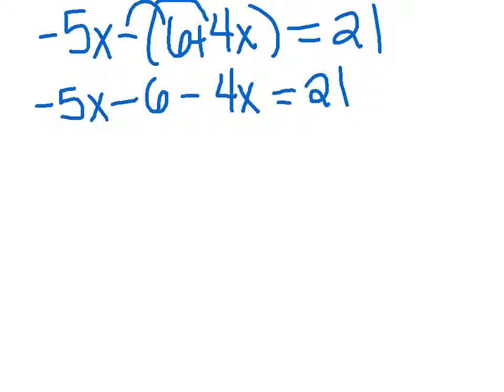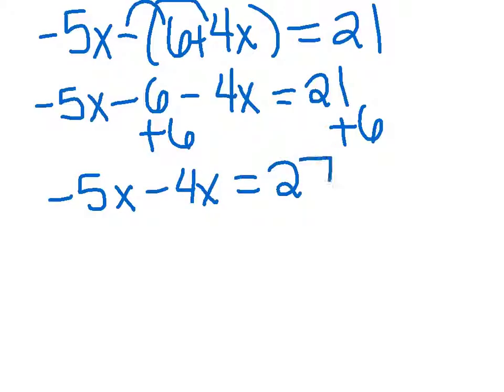Now let's get the x's over to the left side and all non-x's over to the right side. We want to solve for our variable x. So to do this let's add 6 to both sides. Leaving us with negative 5x minus 4x equals 21 plus 6 which would be 27.